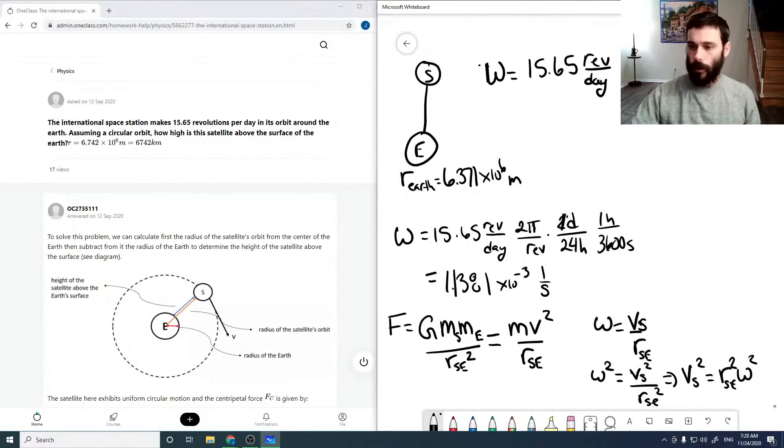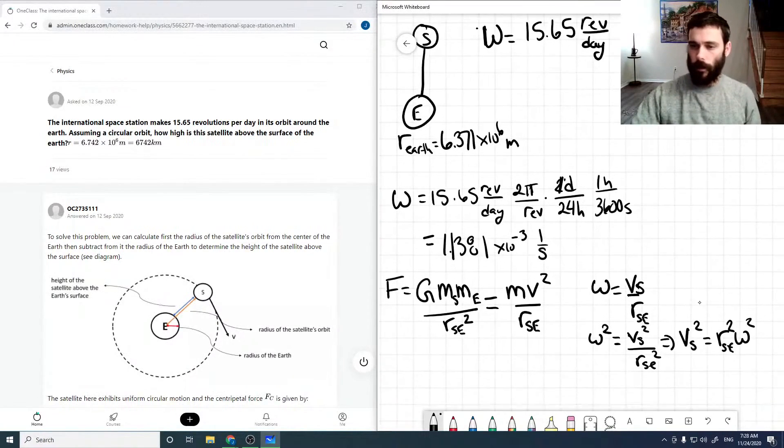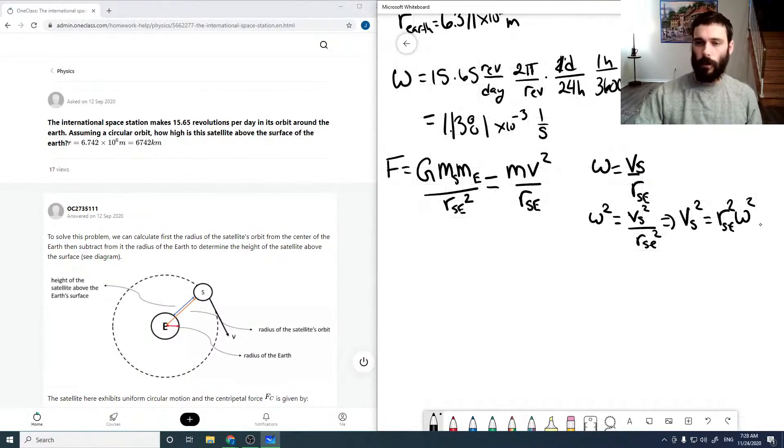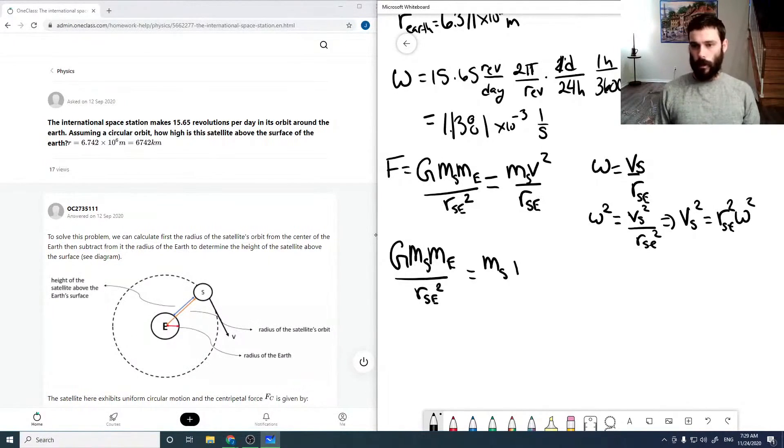Okay, so putting these values into our gravitational equation, we get that G, M_S, M_E over R_SE squared. And this would be the mass for the satellite, is the mass of the satellite times R_SE squared, omega squared over R_SE.